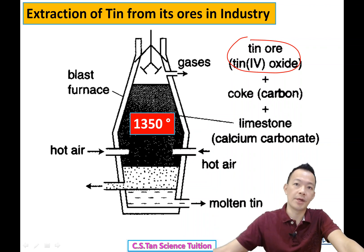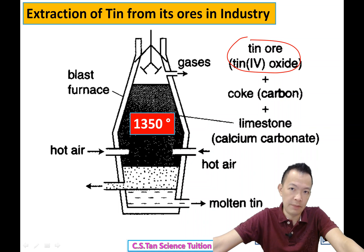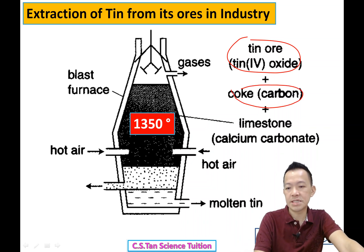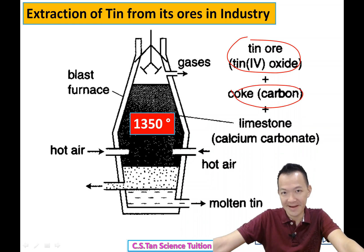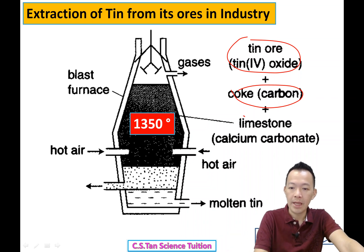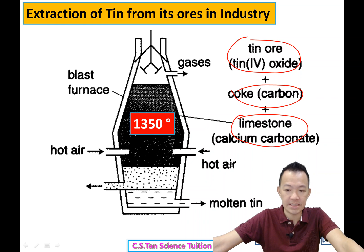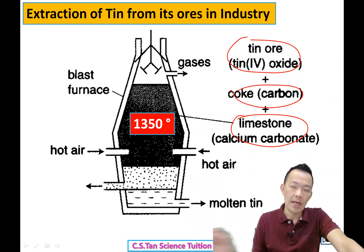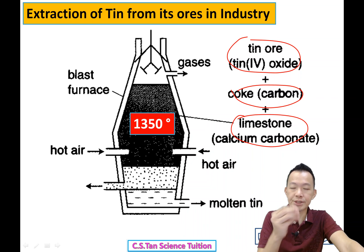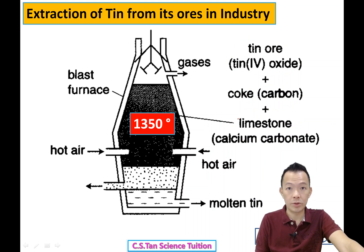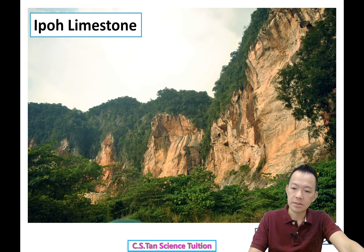The tin ore was transported by using the railway track — by train from Ipoh — and came to the railway station. Limestone also comes from Ipoh — calcium carbonate — and it also travels by train. All these materials go to the factory in Butterworth.